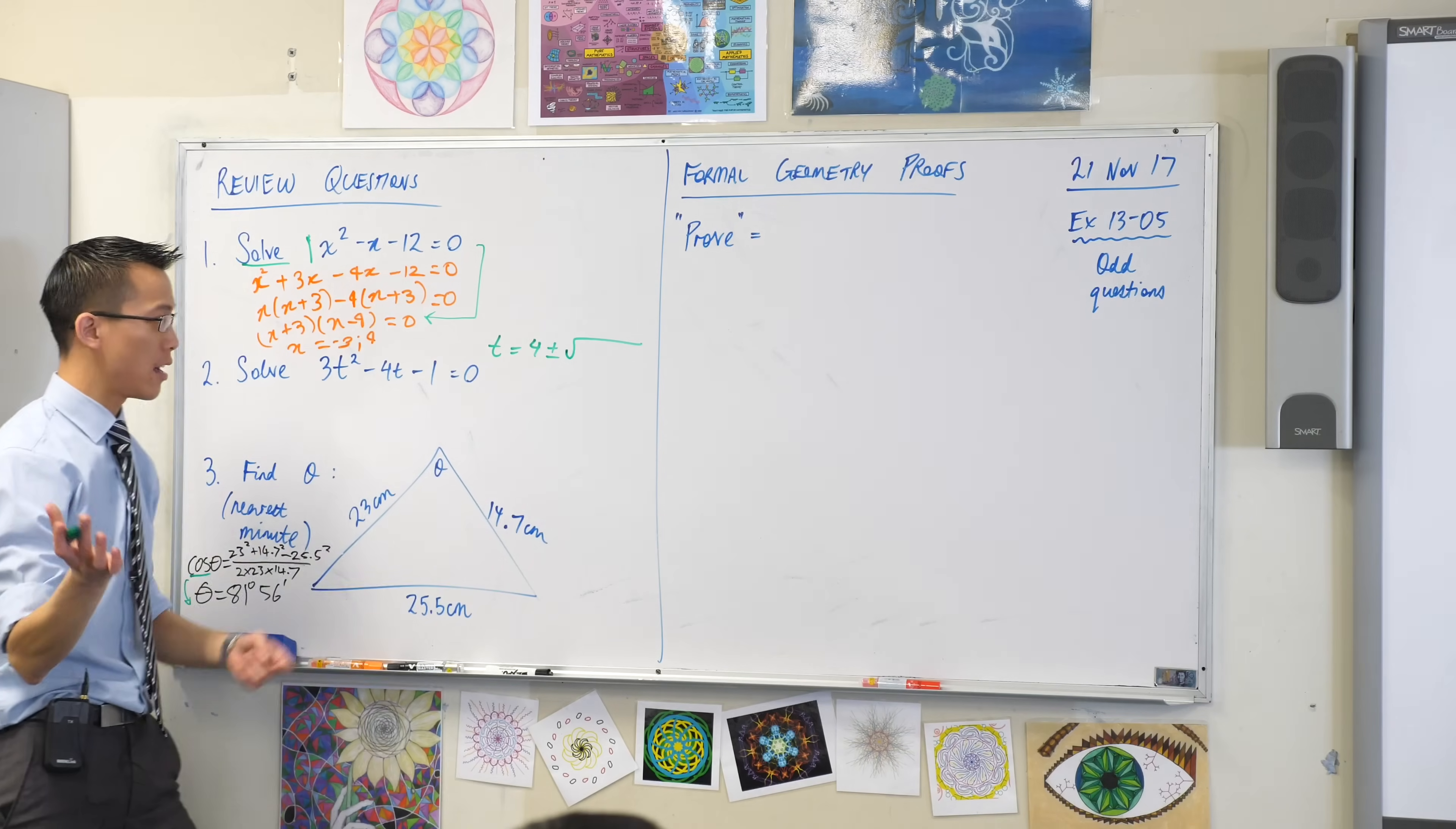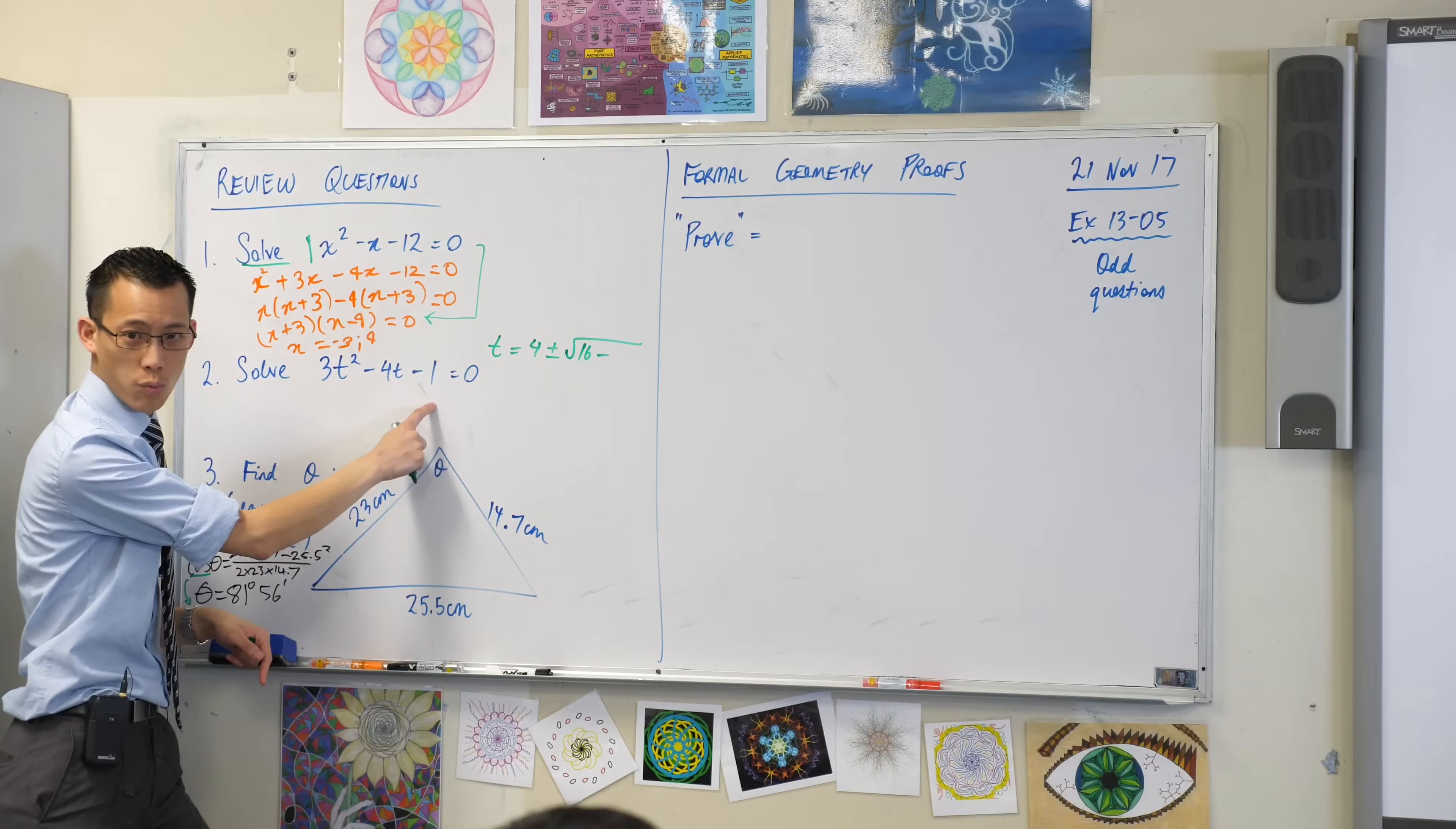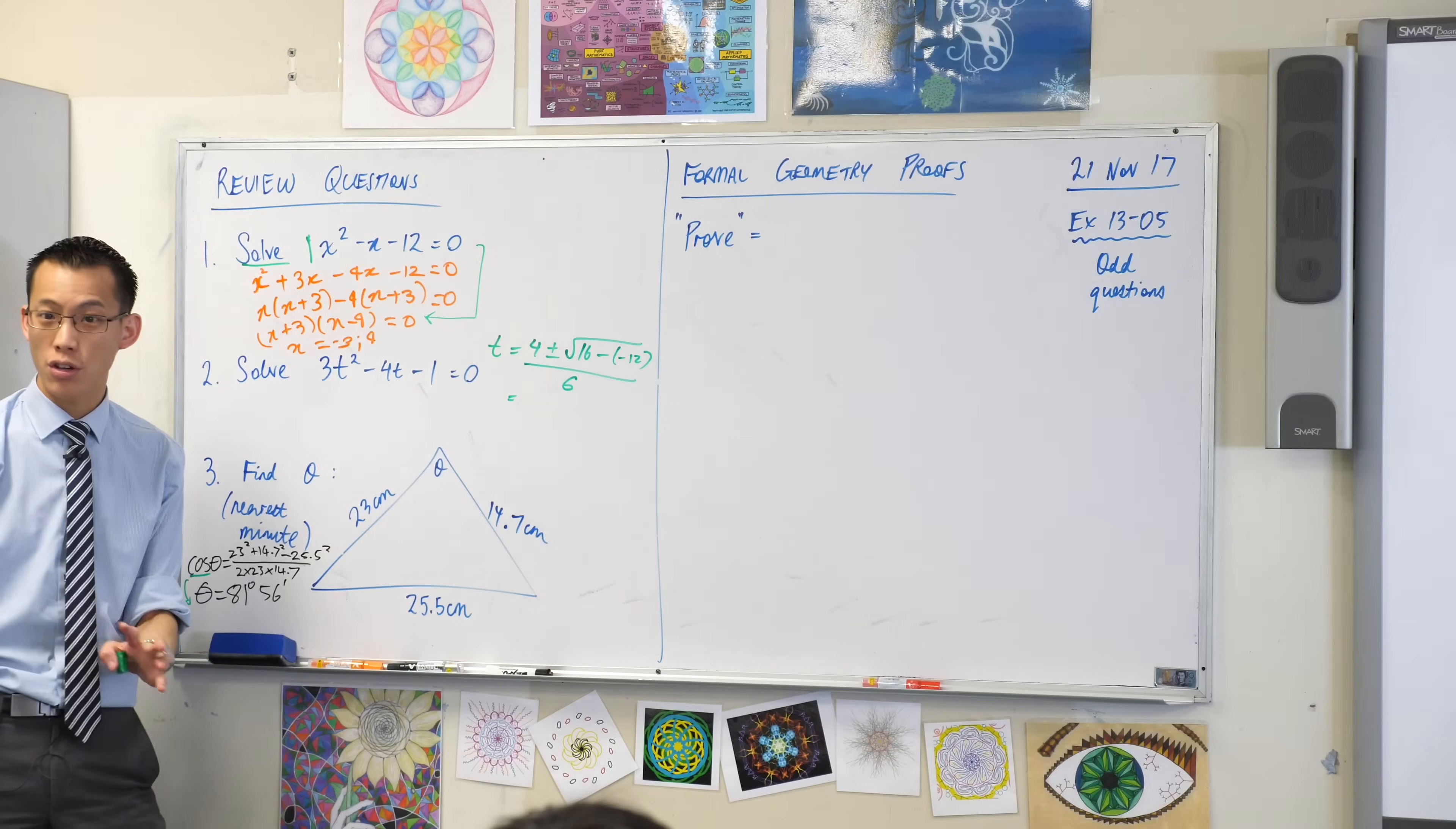There's the square root that you just told me about. What's underneath the square root? Okay, B squared, which in this case is 16. Take away 4ac, which is 4 times 3 times negative 1. That's 12, isn't it? So that's actually, I'll put negative 12 there. Is that okay? There's my B squared minus 4ac. All over what? 2a. 6. Okay, so far so good.